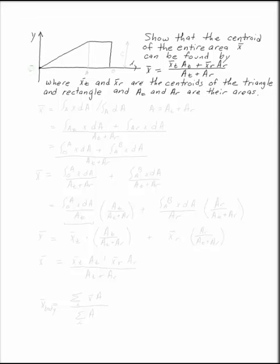Show that the centroid of the entire area can be found by finding the centroids of the triangle and the rectangle and adding them up with a weighted average.